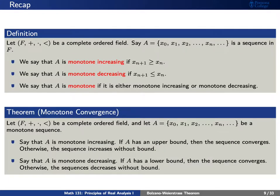The monotone convergence theorem, simply put, says that every monotone sequence converges. Say that our sequence is monotone increasing. If it has an upper bound, then the sequence converges. Otherwise, the sequence increases without bound. If the sequence is monotone decreasing and has a lower bound, then the sequence converges. Otherwise, the sequence decreases without bound.